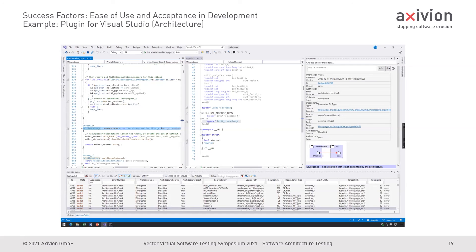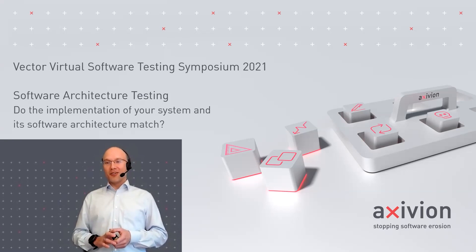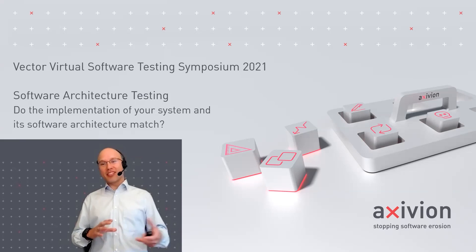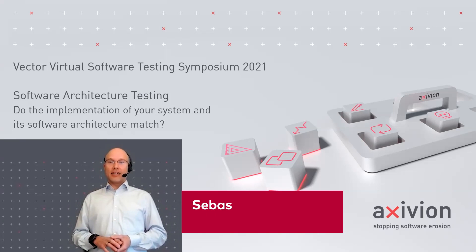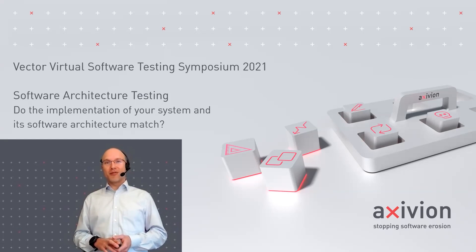Of course, we also have a nice integration into VectorCast. So any of you who are using VectorCast will get this information about architecture deviations directly within VectorCast. Jeff just did a great video on that — I think it's still accessible, so contact your contacts at Vector to get a look at the video from Jeff on how the integration of VectorCast and Exxivion works. I'm now very happy to meet you in the Q&A session, and I'm happy to answer your questions. Thank you very much.